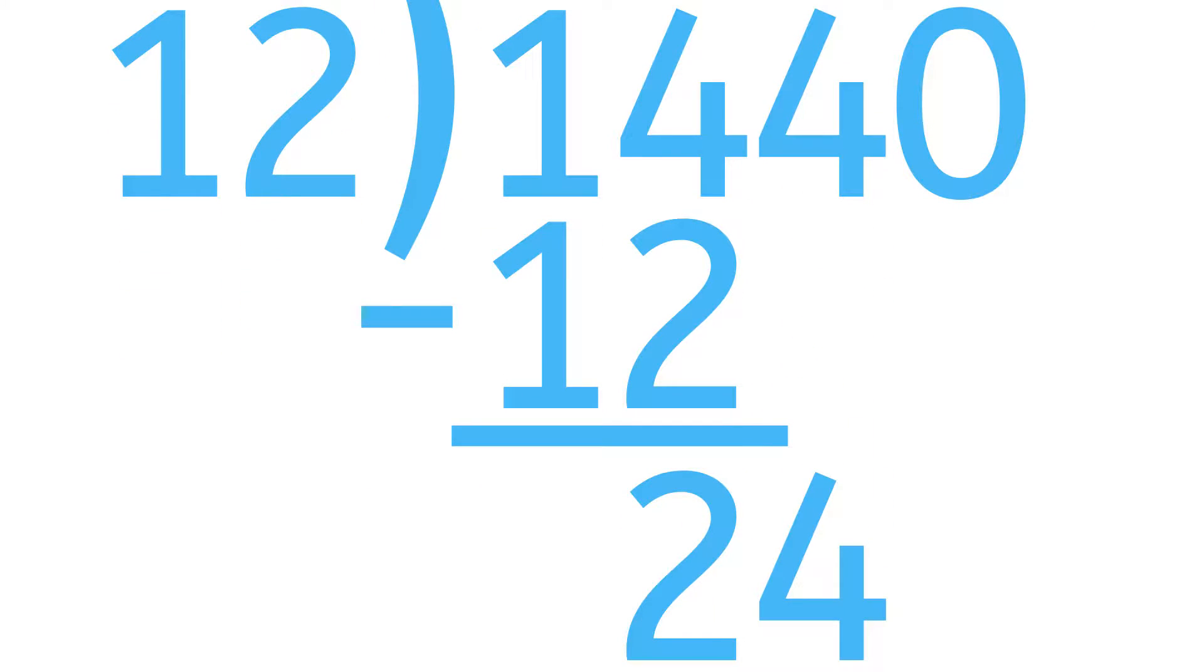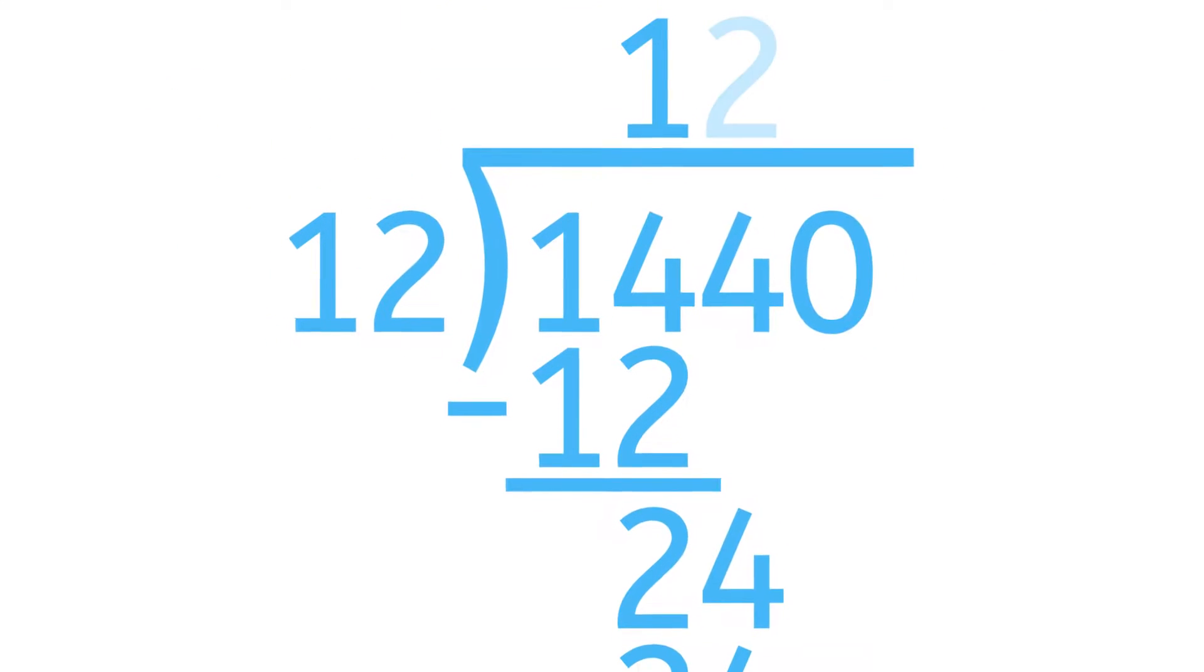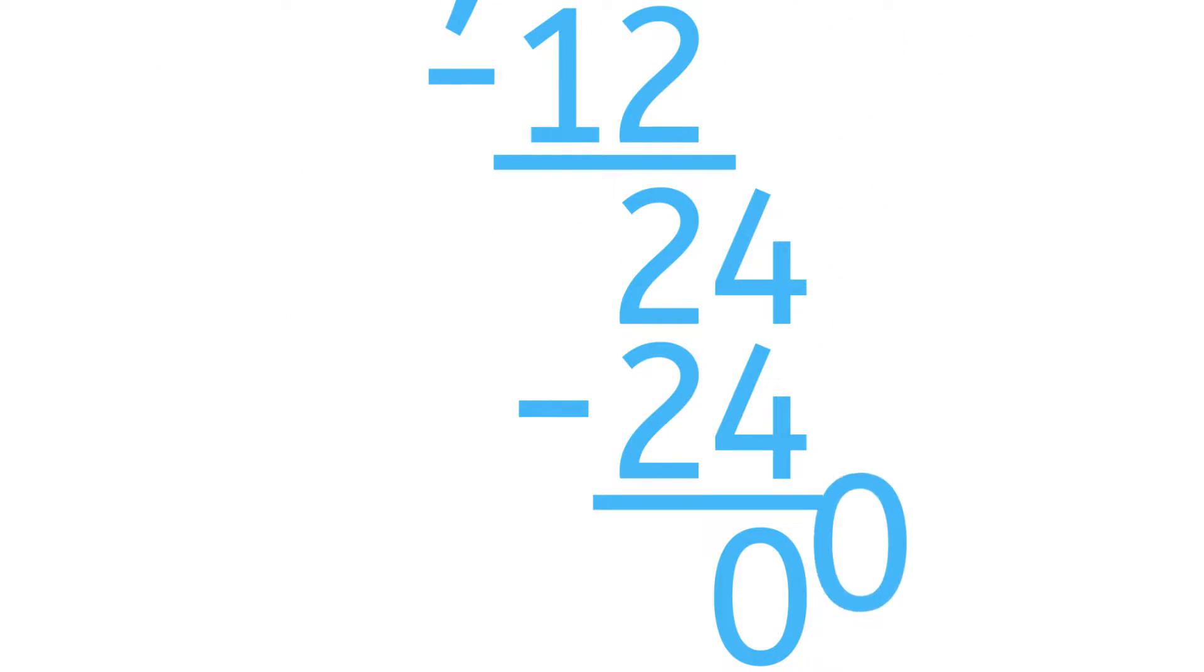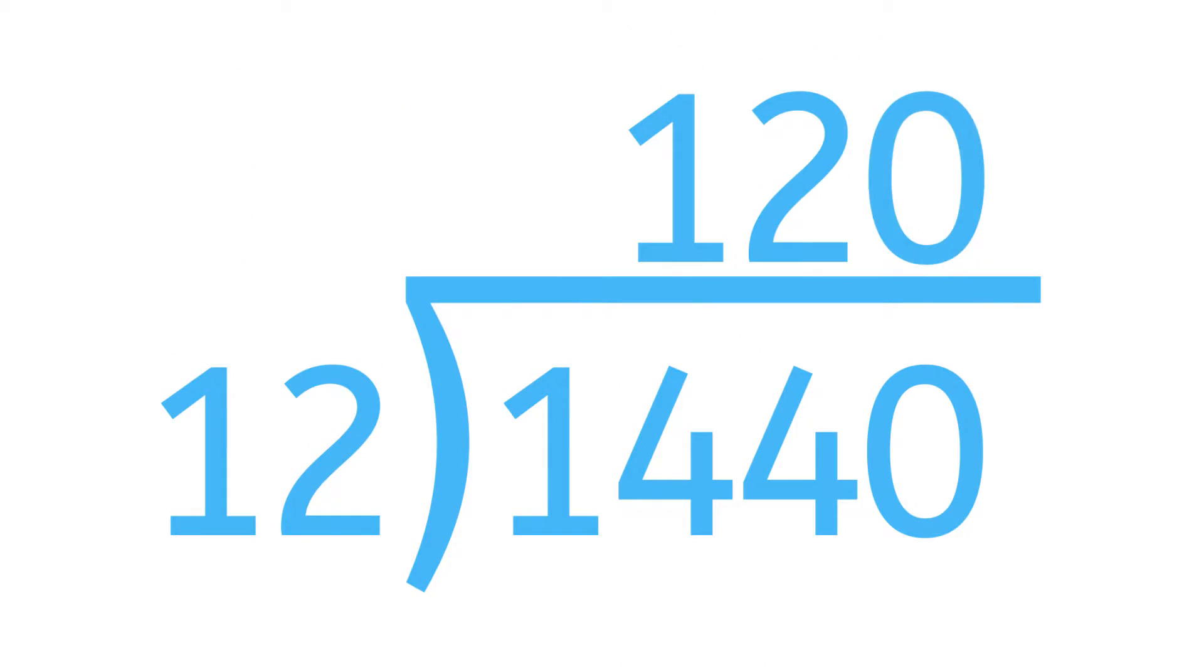Now let's subtract 12 from 14 and bring down the 4. We have 24. 12 can go into 24 twice. Now we have to bring that down to 0. And 12 can't go into 0 at all, so let's write 0. Our answer is 120.